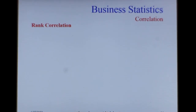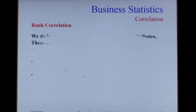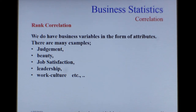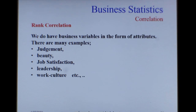Now we move on to rank correlation. The correlation coefficient can also be applied in business situations where you talk about attributes or qualitative parameters of data. Rank correlation can be used for several attributes — for example, judgment, beauty, job satisfaction, work culture, leadership — all those attributes which cannot be expressed by numeric value. You can give certain ranks, scale data on a rank, and then compare to arrive at the correlation coefficient.